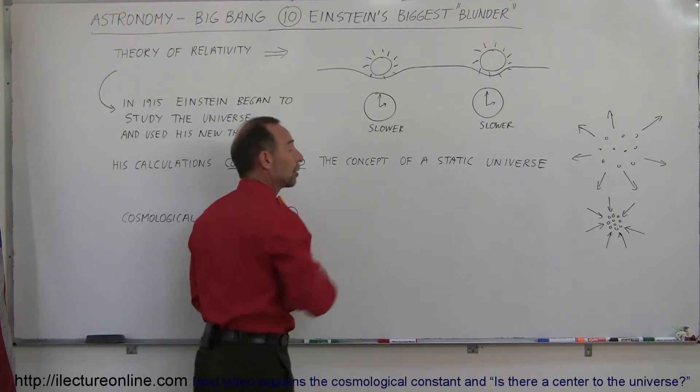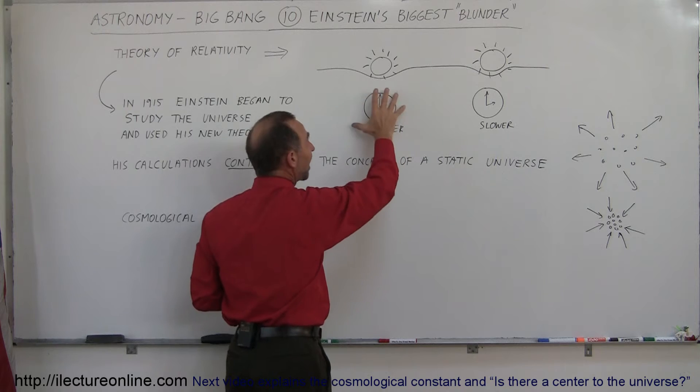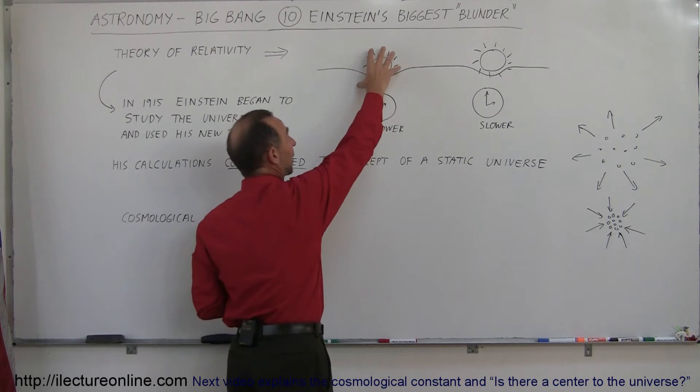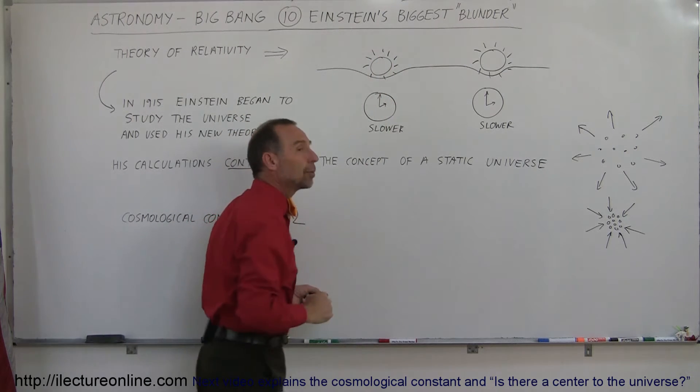He also discovered with the theory of relativity that space and time were not constant, that time itself would depend upon how much space was bent. The more space was bent by the presence of a lot of mass, like a star or a galaxy, the slower the time would run.